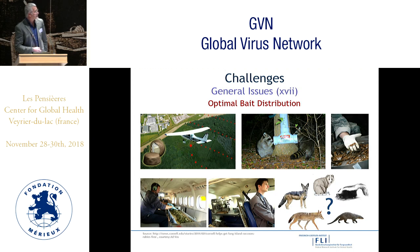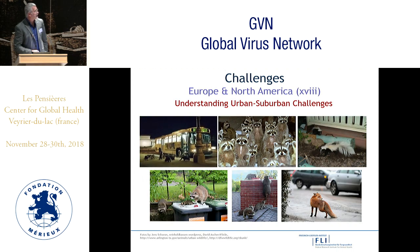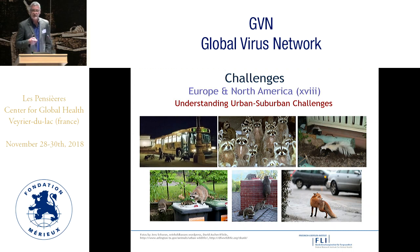We already have optimal bait distribution systems for raccoons and foxes, but not yet for all other wildlife reservoir species. The key issue is that wildlife rabies reservoir species are increasingly found in urban and suburban environments. When designing optimal baiting strategies, we are competing with the sheer abundance of anthropogenic food resources, as well as bait competitors such as companion animals.